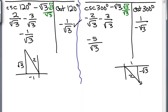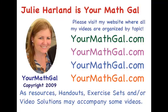So only 120 degrees is a solution. Depending on how you solve this equation, you might get different extraneous roots. What's important is that you check all possible solutions and only the ones that check out are in the final answer. This is YourMathGal, Julie Harland. Please visit my website at yourmathgal.com where all of my videos are organized by topic.